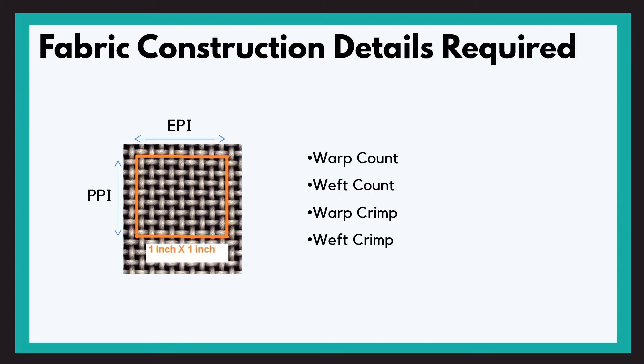Now we will calculate this. We will give some details for fabric construction. First is EPI, that is ends per inch. What is ends per inch? If I have one inch by one inch, that is one square inch fabric sample, the number of warp yarns will be ends per inch. And the number of weft yarns will become picks per inch. Then warp count and weft count, and warp crimp and weft crimp.